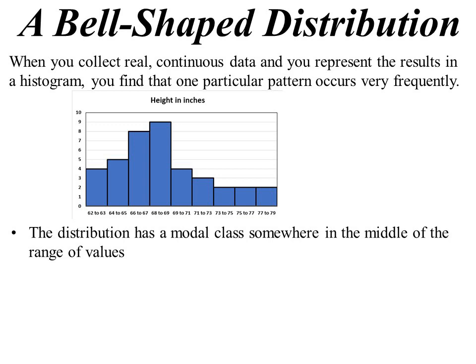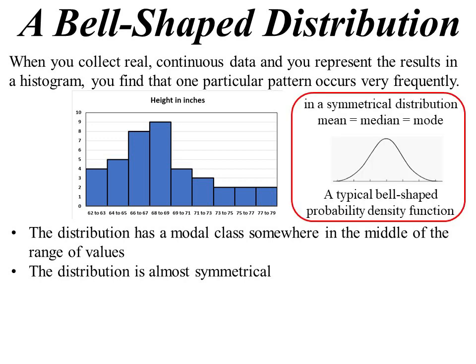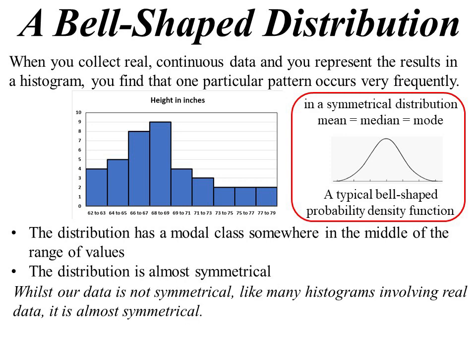Basically what I'm looking for is this: the distribution has its modal class, so the tallest column if you like, somewhere in the middle. The distribution is almost symmetrical, and clearly it's not symmetrical but it's got a bit of a feel about it where it comes down on both sides. Of course the perfect symmetrical distribution, the classic bell-shaped curve, has the mean, the median, the mode all the same thing. Ours is not symmetrical, and a lot of them are not when you're collecting real data, but it's almost symmetrical.